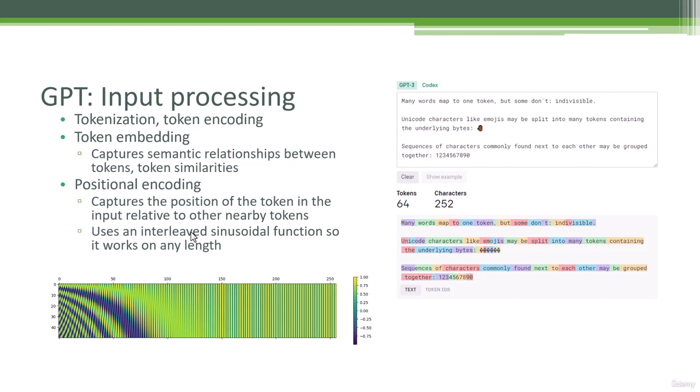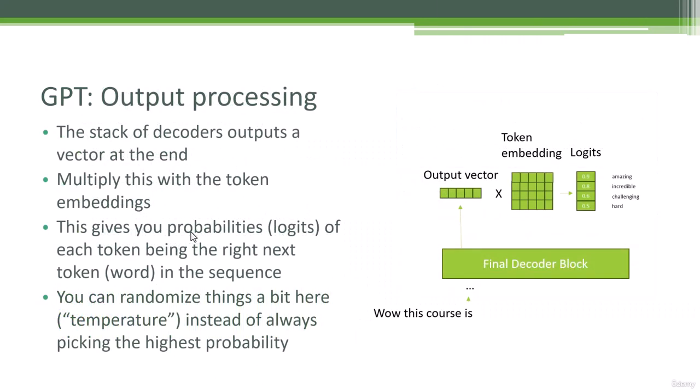That's the basic idea of what we're doing on the input side. Let's also take a closer look at the output side. You might remember at the top of our diagram, we had our final decoder block. And at the top of that, we have a feed forward neural network that's going to spit out an output vector.